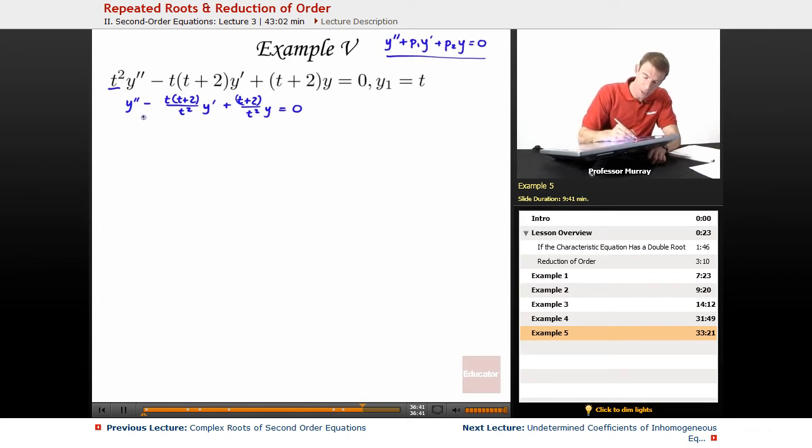Now I've got it into this form. My p1, I can simplify that, is negative, if I cancel that t with t squared, it's negative t plus 2 over t. I could simplify that more: that's negative 1 plus 2 over t.